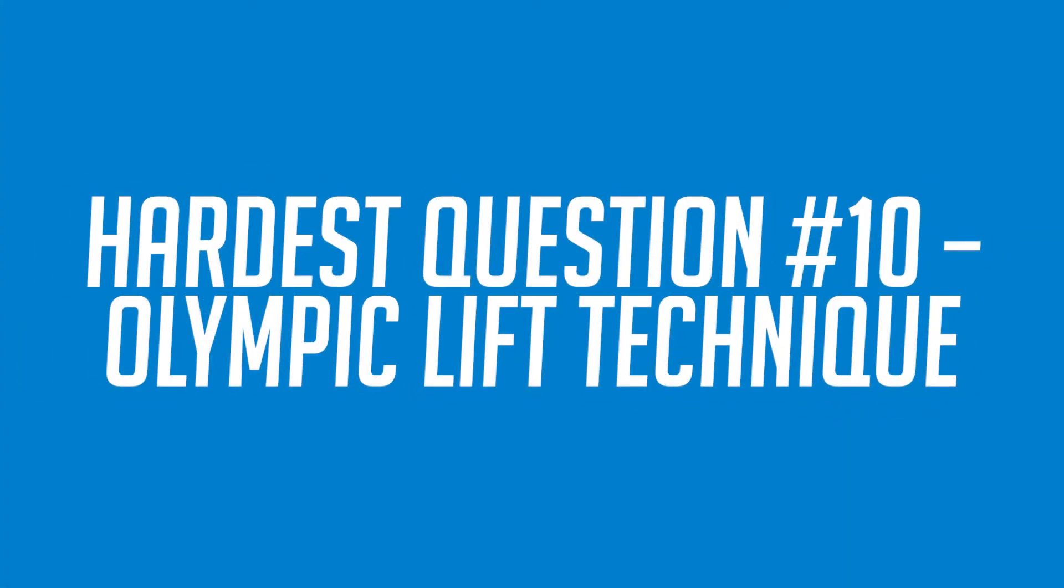Hardest question number 10, Olympic lifting technique. The CSCS exam will require you to know and understand all of the Olympic lifts inside of their textbook. This includes the initial setup as well as the bar position in each portion of the lift. Let's consider our 10th and final example.